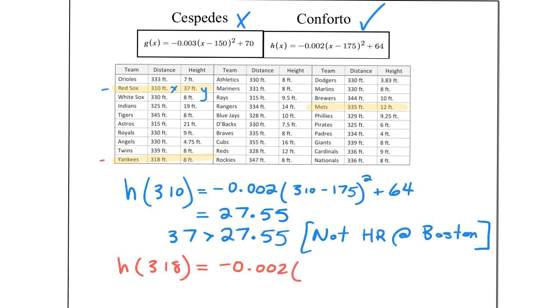So for Yankee Stadium, notice we have a shorter wall. It's only 8 feet tall. So I'm plugging in 318 for X into Conforto's function.